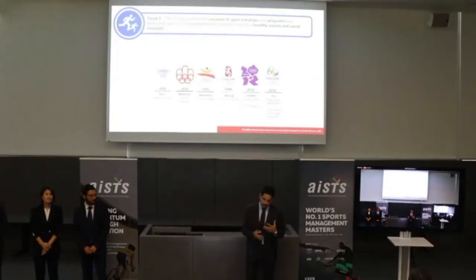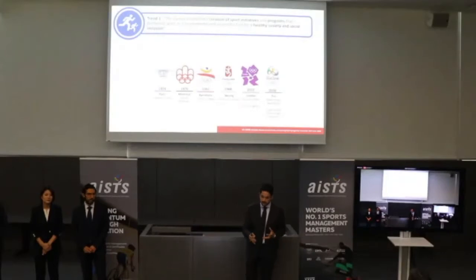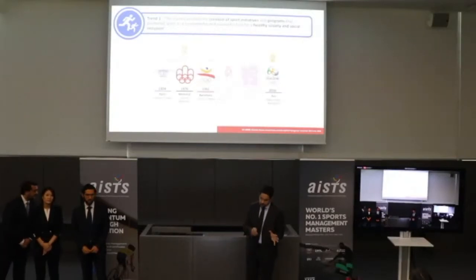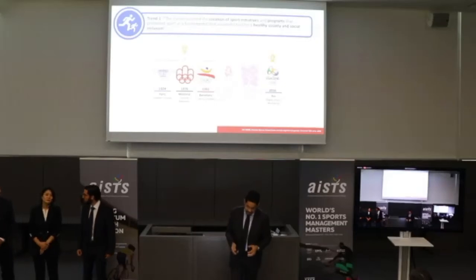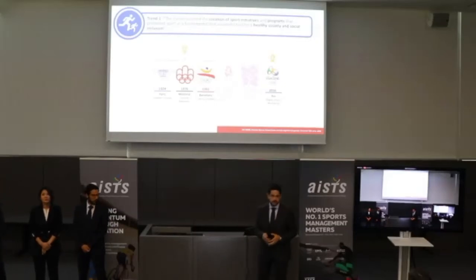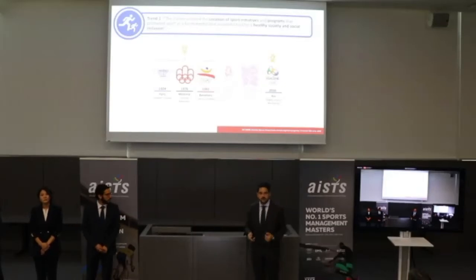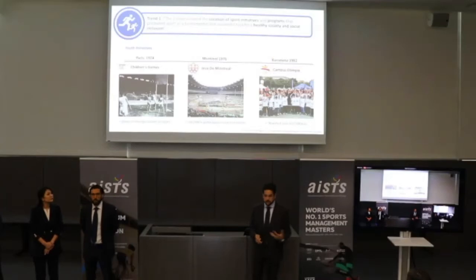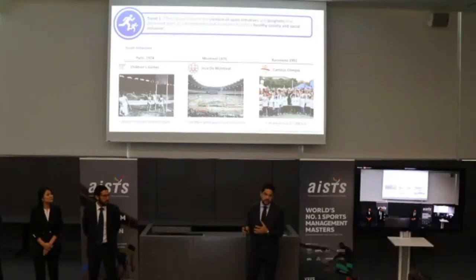One trend we saw is that the Olympic Games enabled the creation of sports initiatives and programs that promoted sports as a fundamental tool for a healthy society and social inclusion. The concept of integrating multi-sport events into the Olympic Games for youth started as early as 1924, with multiple legacies from Montreal, Barcelona, Beijing, London, and Rio. The children's games started in 1924 and really promoted the ideals of the Olympic Games to youth. The Jeux de Montréal was one of the most notable legacies, reaching over 500 million participants.